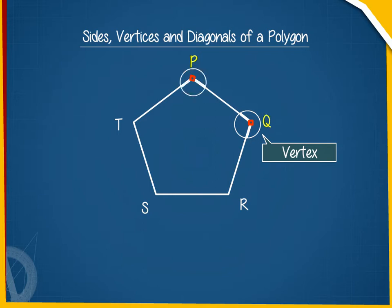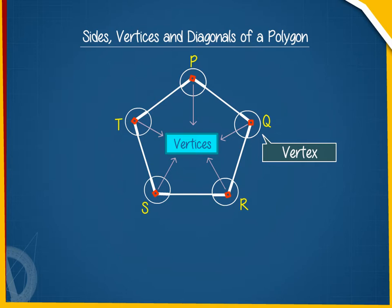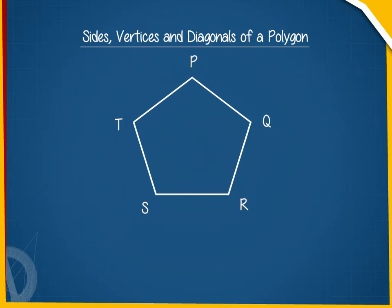Here, P, Q, R, S and T are the vertices of the polygon PQRST.